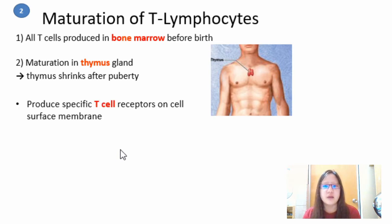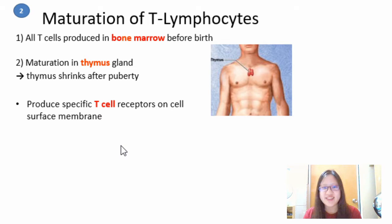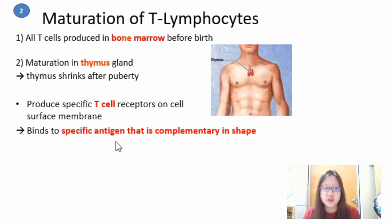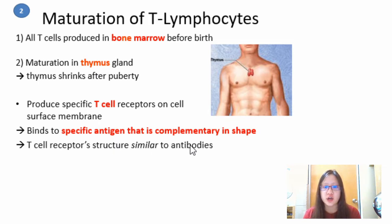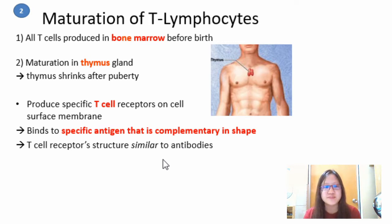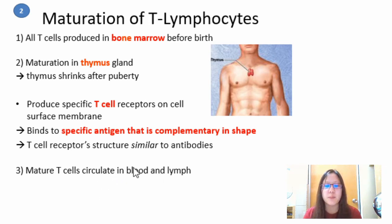T cells also have receptors on their cell surface membrane that are complementary to a specific antigen — one T cell, one type of receptor, one type of antigen. The structure is very similar to antibodies, but they are called T cell receptors, not antibody receptors. Only after maturation can the T cell circulate in the blood.